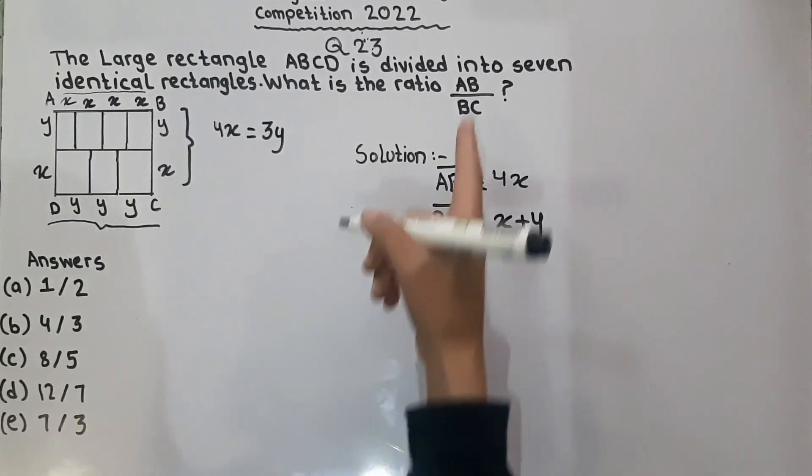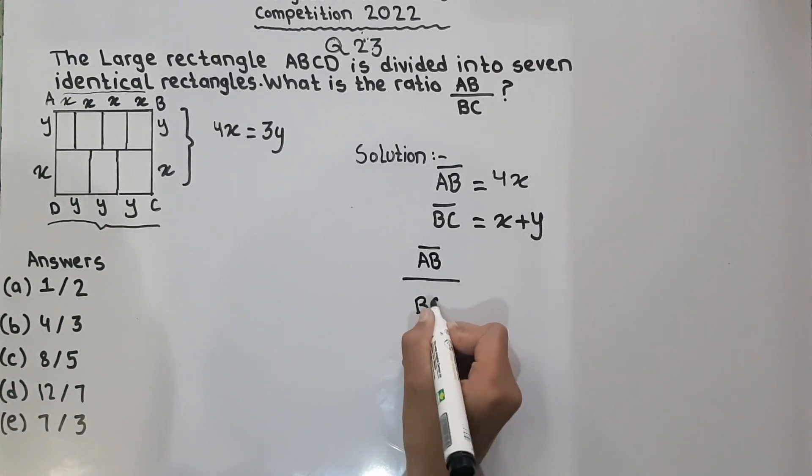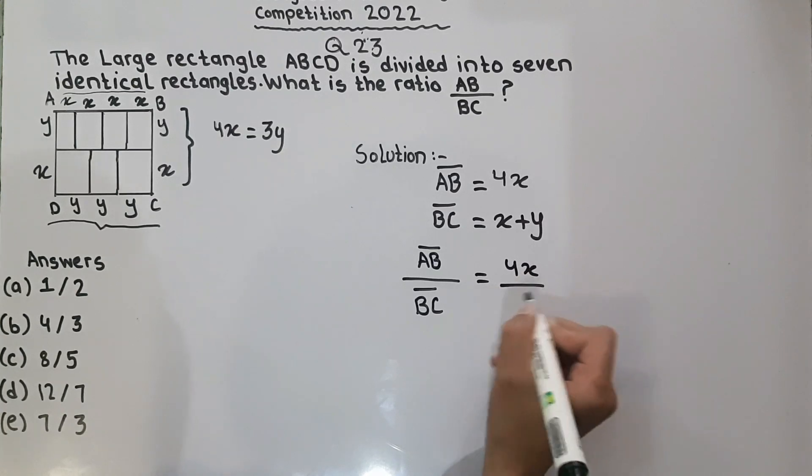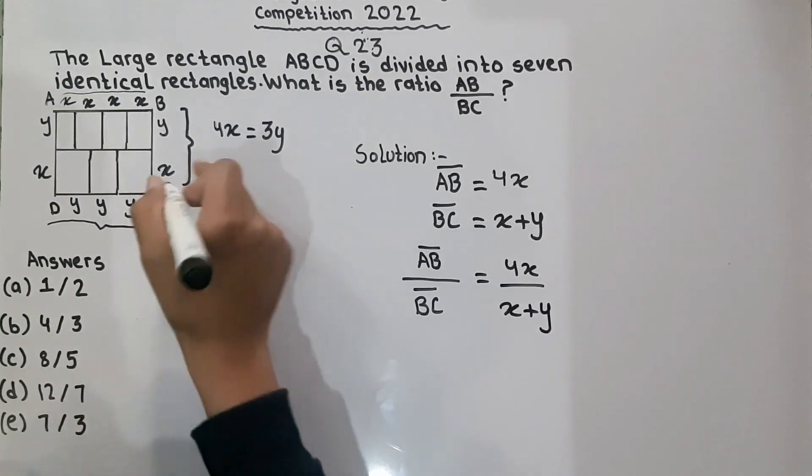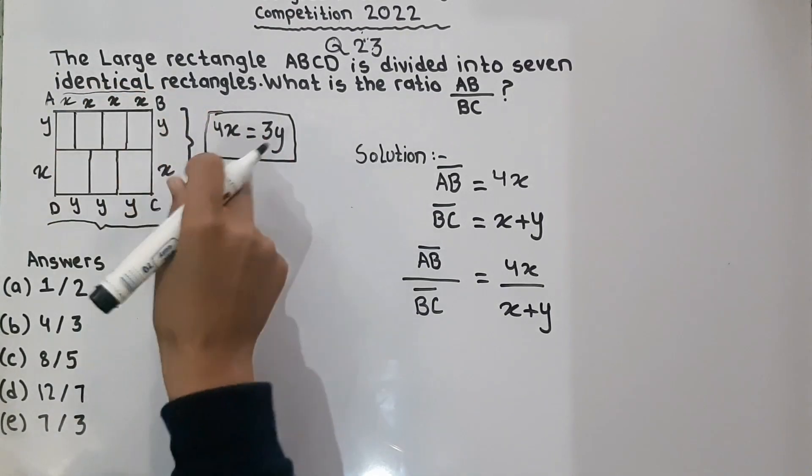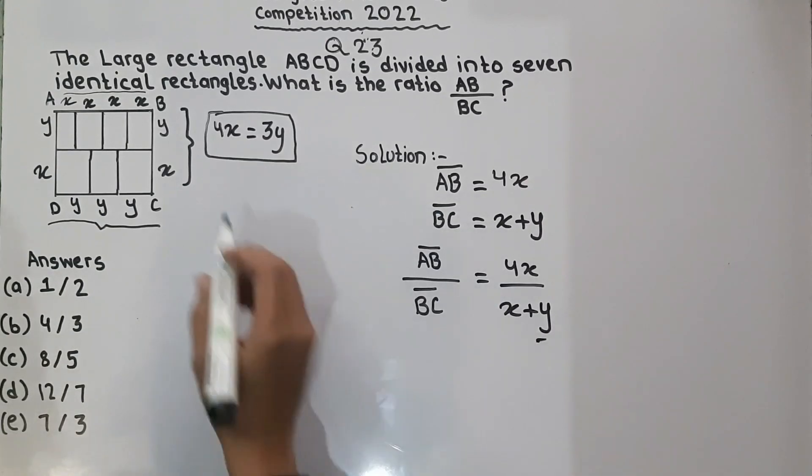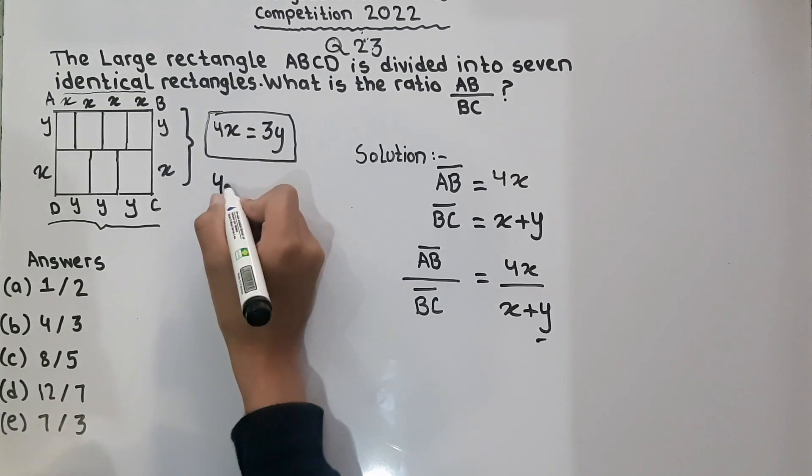We have to find AB divided by BC. So 4X is equal to 4X divided by X plus Y. Now we will use this formula. First we will solve it. Now we will find the value of Y.